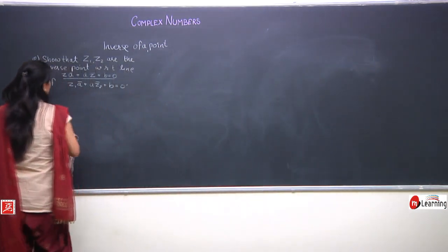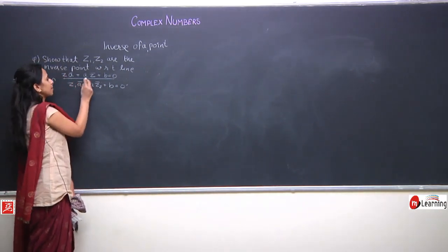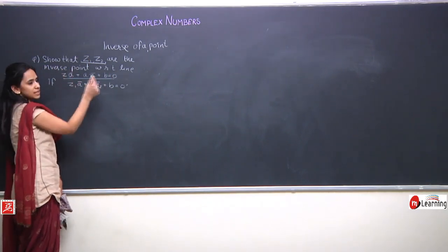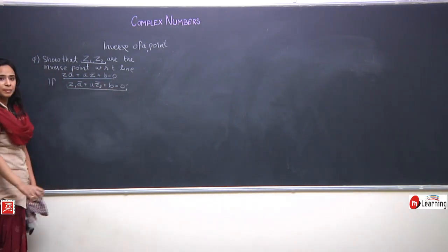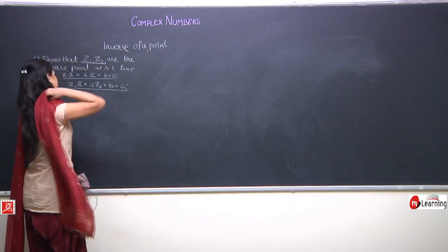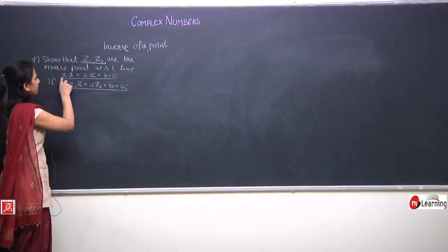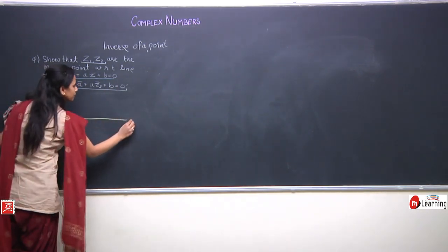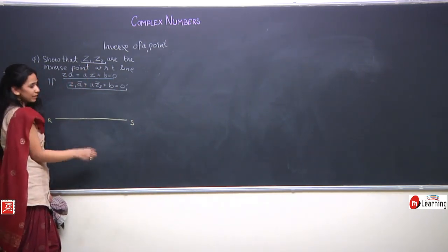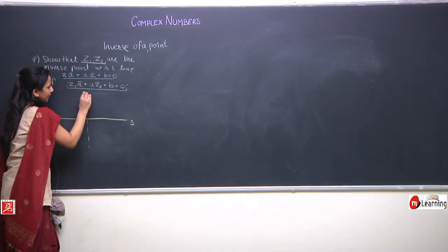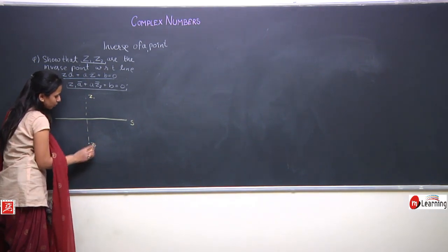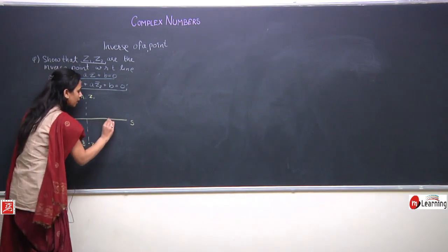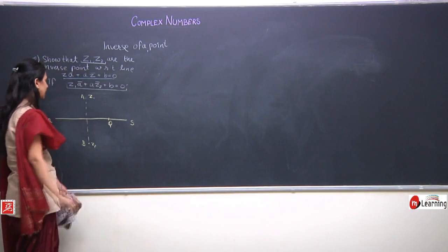The question: we are given a line z·a-bar plus a·z-bar plus b equals 0, and z1 and z2 are two points inverse of each other with respect to this line. We have to prove that z1·a-bar plus a·z2-bar plus b equals 0. Let us draw the situation: we have line RS, with z1 and z2 as inverses with respect to it. Let z1 be represented by A, z2 by B, and let Q be a point on line RS.